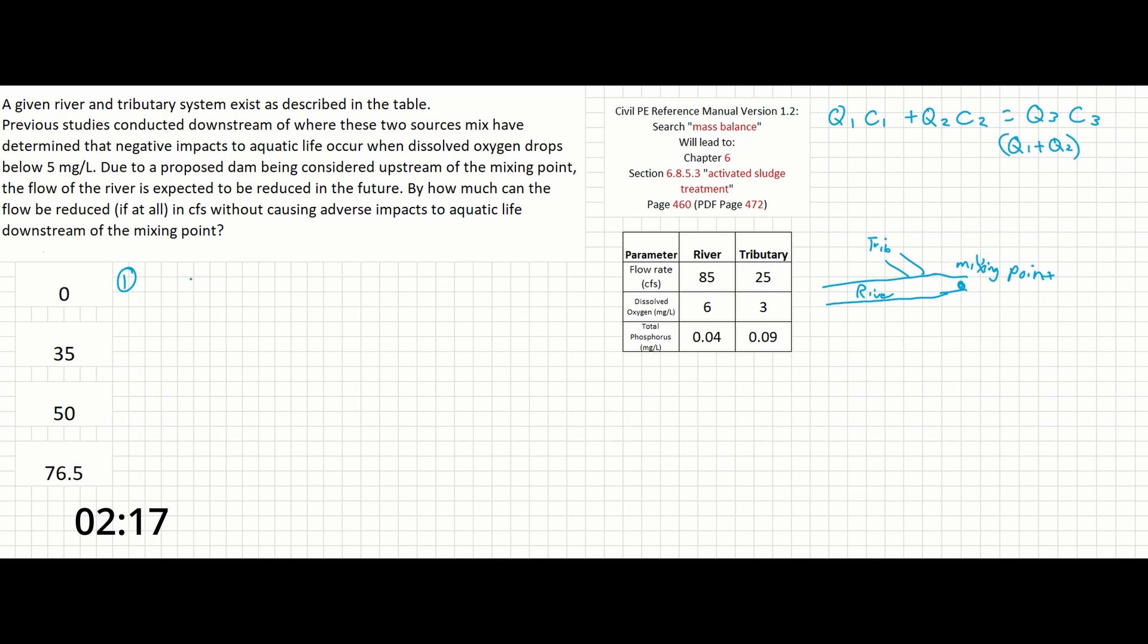In this case, Q1 we're going to say is the river. So, 85 feet cubed per second times the concentration of 6 mg per liter plus 25 cubic feet per second from the tributary times 3 mg per liter.